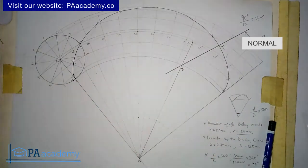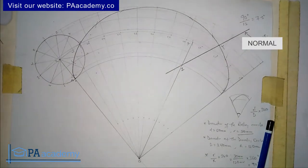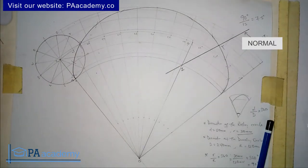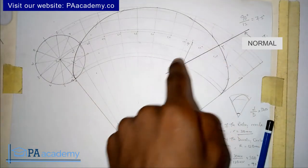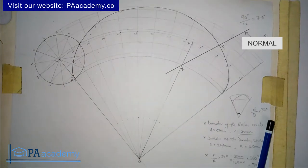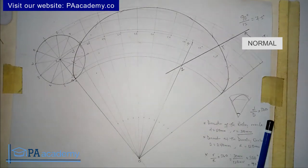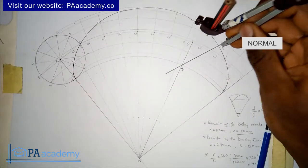So this is the normal to the epicycloid. Now that we've obtained the normal, the next thing is to get the tangent. Remember that the tangent is perpendicular to the normal, so from point Y I'm going to draw a line that is perpendicular to the normal.